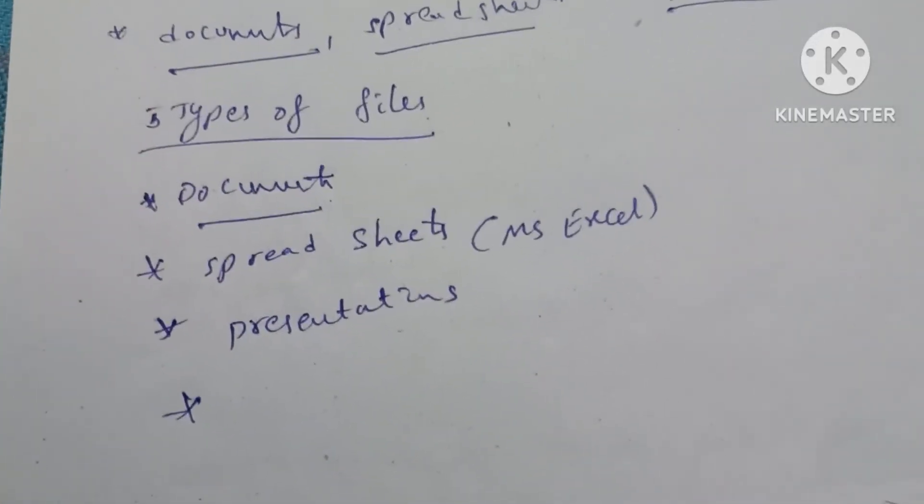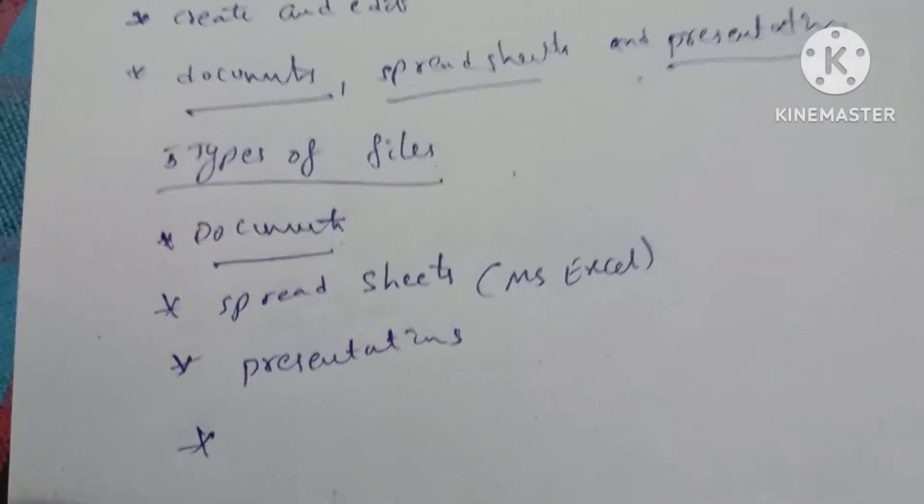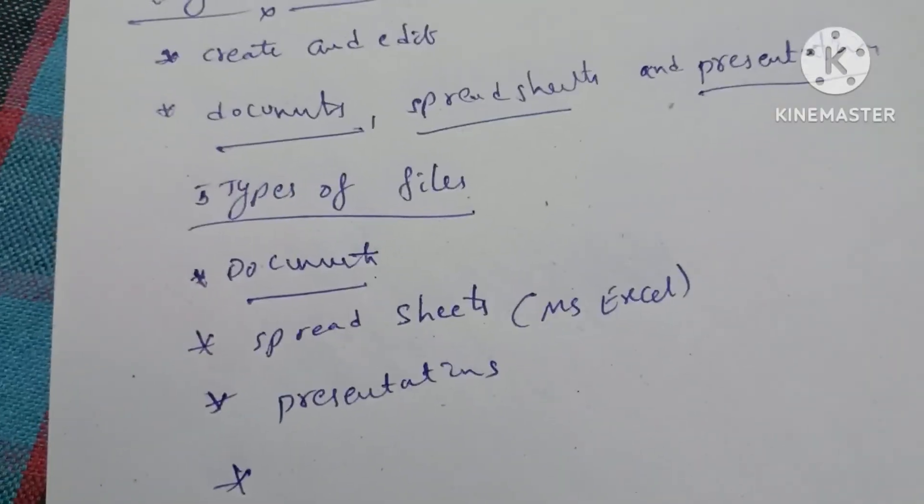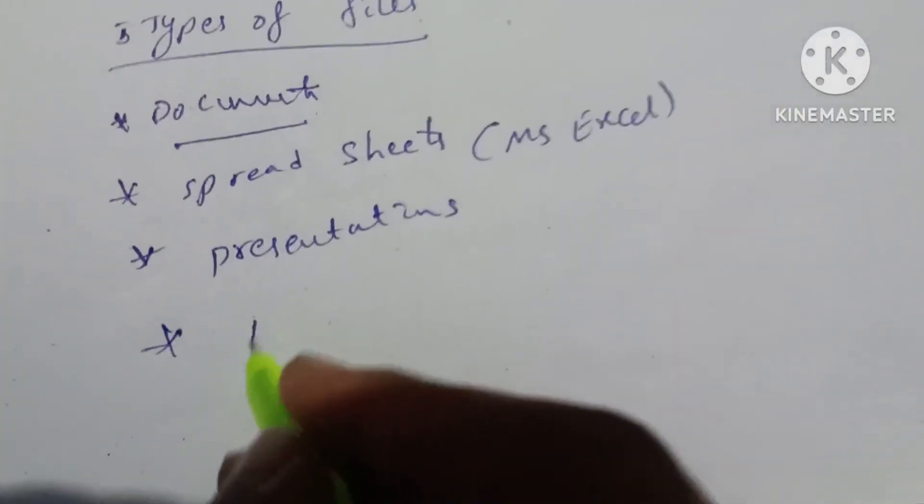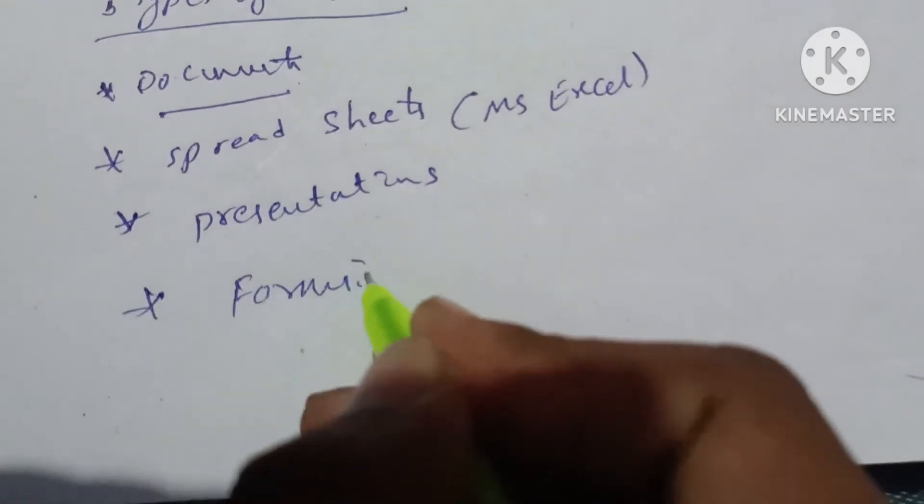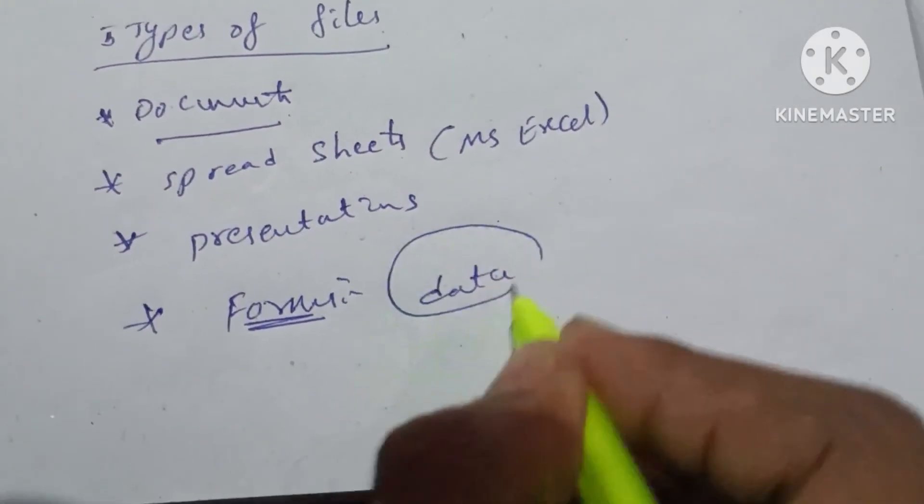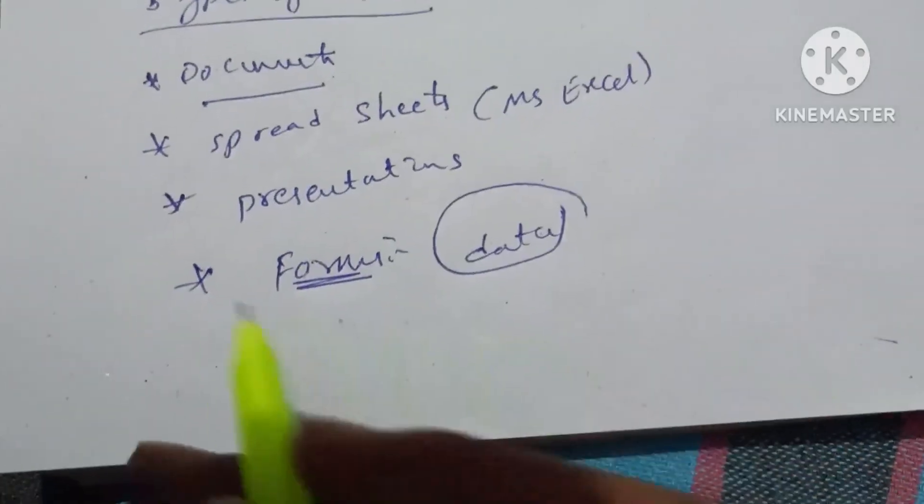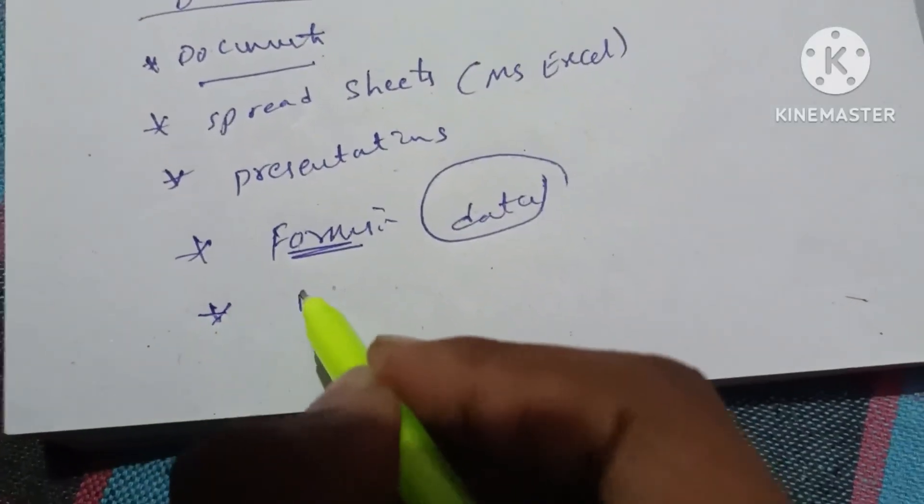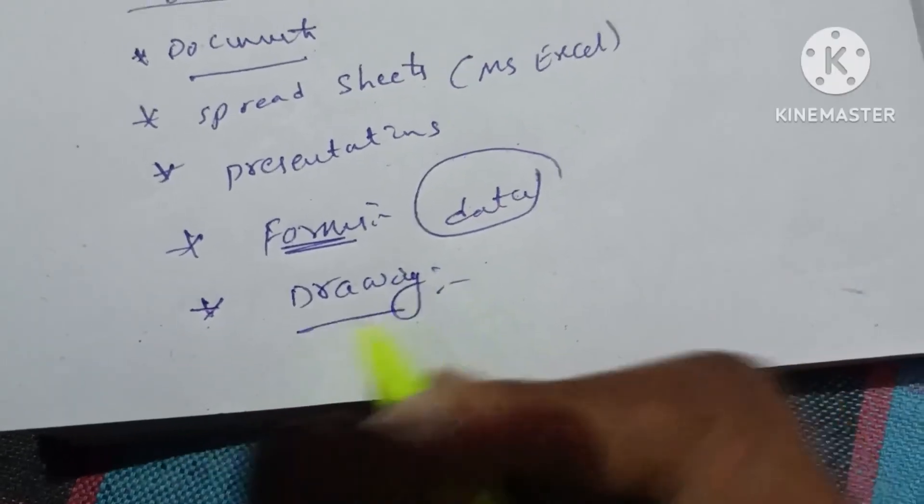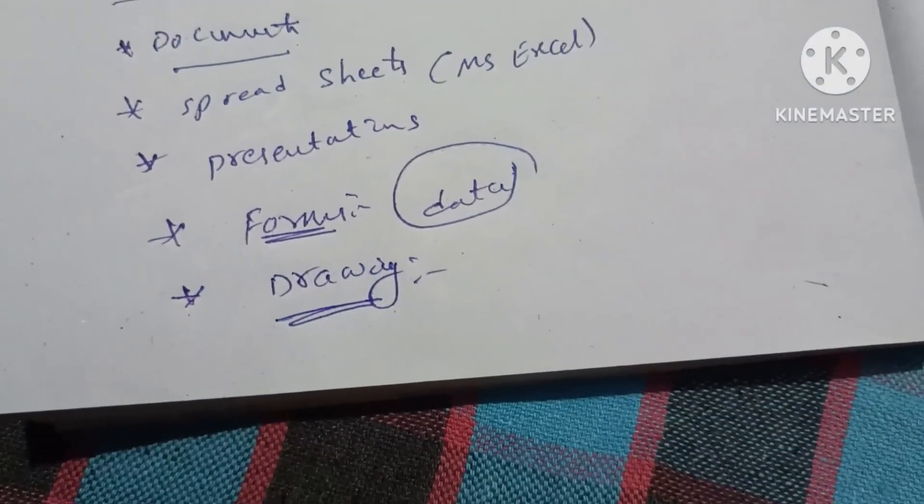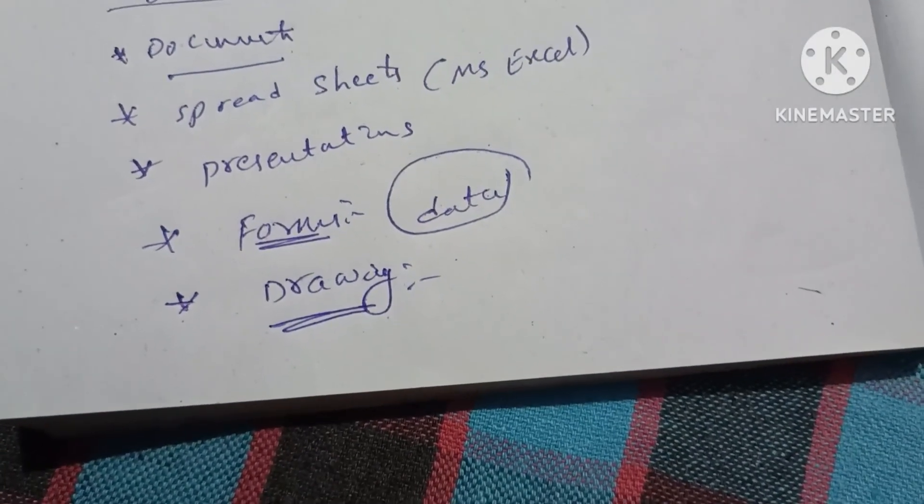Next, we have Google Forms for collecting and organizing data. The last type is Drawings, which are for creating simple vector graphics or diagrams.